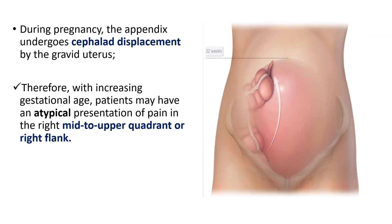With increasing gestational age the patient will have atypical pain — atypical mainly in terms of location. The location of pain in a non-pregnant patient is in the lower abdomen, but when the appendix is pushed upward it may be in the middle, upper quadrant, or right flank, depending on the position where it is displaced.